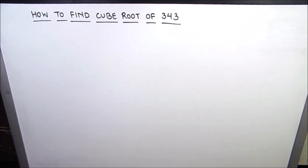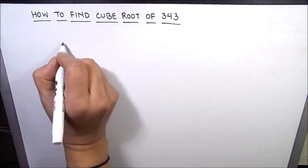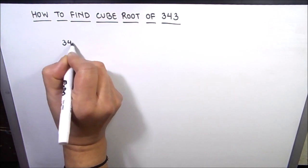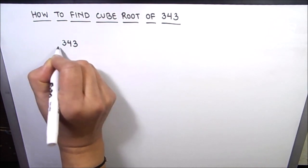In the prime factorization method, we divide the number by its prime factors and write it as the product of its prime factors. So let us now do the prime factorization of 343. For this, we are going to write the number like this.